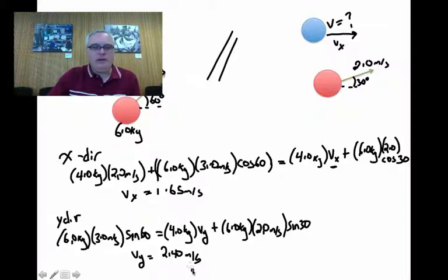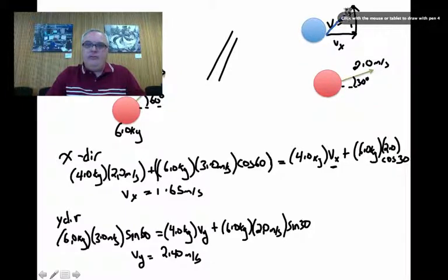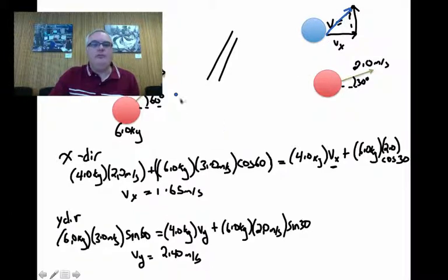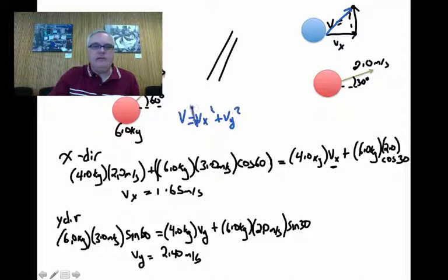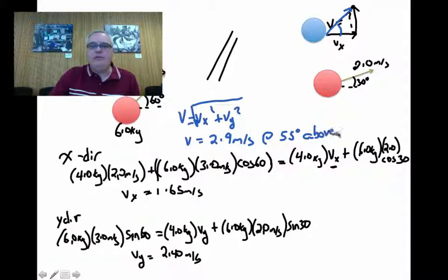So I have an x component and a y component. And I can find the velocity vector here, which is going to be this vector. Because I figured out the x and the y components. So I can now find the velocity of this object using Pythagoras. So the x component squared plus the y component squared, and I take the square root of that. What I end up with is this object is now traveling at 2.9 meters per second. And I also need to know this angle. And I use tangent to get that it's traveling at 55 degrees above the positive x-axis.